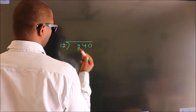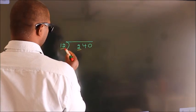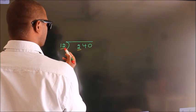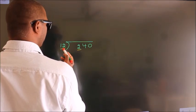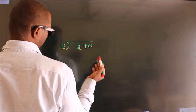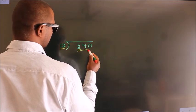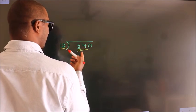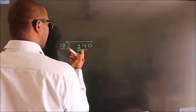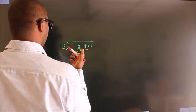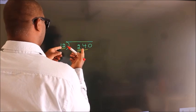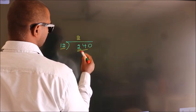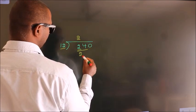Here we have 2, and here 12. 2 is smaller than 12, so we should take 2 numbers: 24. When do we get 24? In the 12 table — 12 twos are 24.